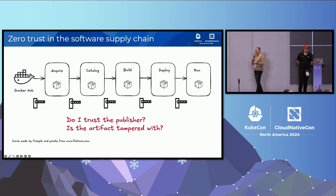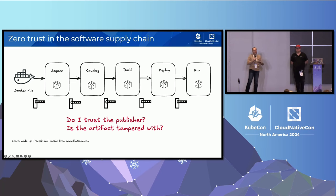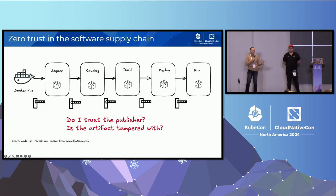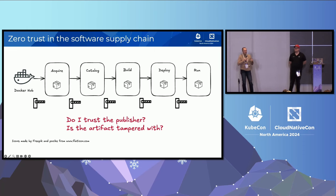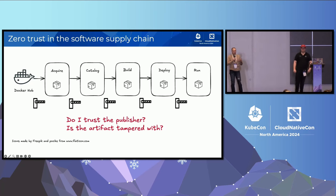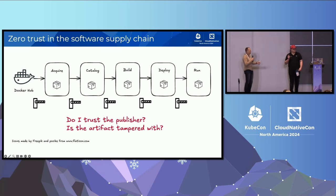The way we look at the supply chain for containers or any other software artifact is you go through a bunch of stages. First you acquire an image from Docker Hub, GCR, GHCR, and so on. After that you build an internal catalog of trusted images, then use it for build, then deploy it and run it. Between each one of those stages we are looking to implement authentication and check for integrity of any software artifact, and not only software artifacts but also additional supply chain artifacts like SBOMs, vulnerability reports, or attestations.